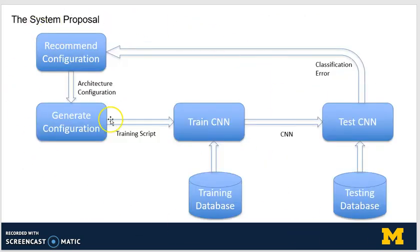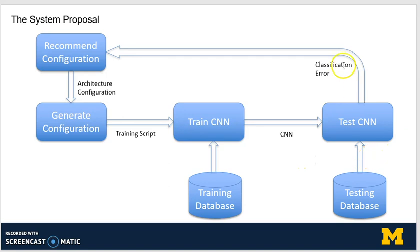My proposed system looks something like this. We have a subsystem which recommends the configuration. Based on that, the generate configuration block produces the training script. The train system, using the training database and the training script, creates a CNN. The test CNN uses the testing database to generate the classification error, which is fed back to the recommendation subsystem. The recommendation subsystem tries to tweak the parameters so that the classification error comes down in each iteration of this loop.